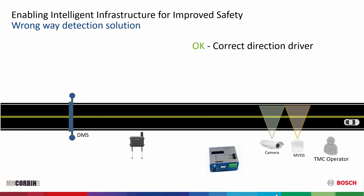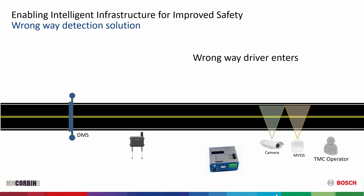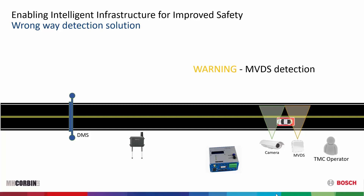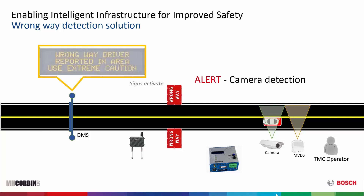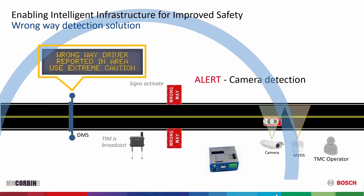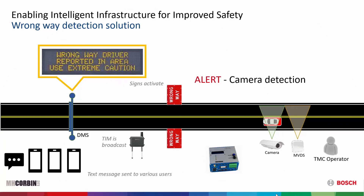Here's an animation of how it can look. You have drivers coming down the road, and in this case we're using a dual detection — first radar, then video. When you have a confirmed wrong way driver, the Connect ITS takes action: it invokes the beacons and messaging, broadcasts DSRC messages, sends alerts by email and text message — a variety of events all designed to clear the roadway and make it safe until that wrong way driver is cleared.